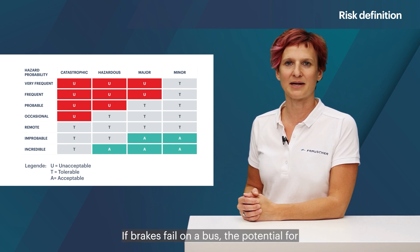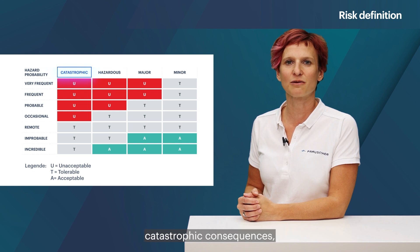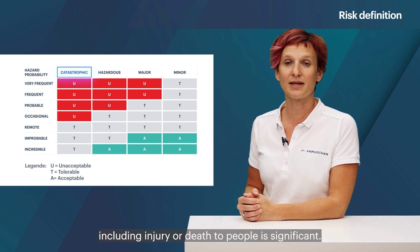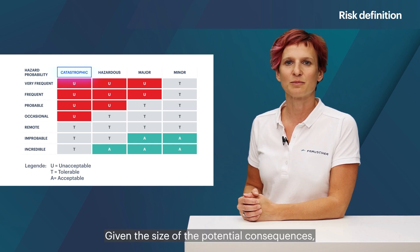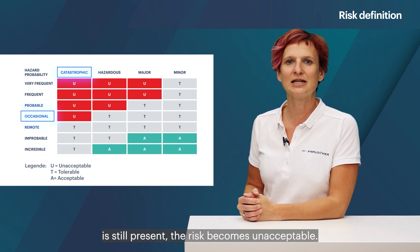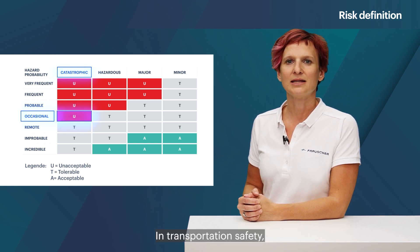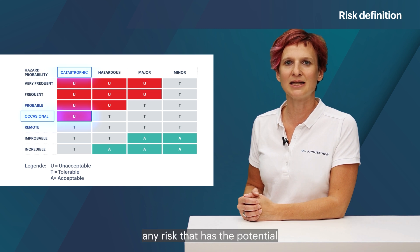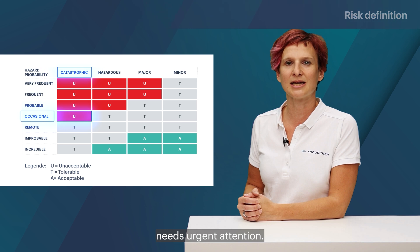Let's look at the bus and the hazard for the function brake. If brakes fail on a bus, the potential for catastrophic consequences, including injury or death to people, is significant. Given the size of the potential consequences and the fact that the chance of brake failure is still present, the risk becomes unacceptable. In transportation safety, any risk that has the potential for catastrophic events needs urgent attention.